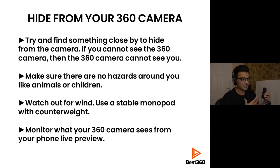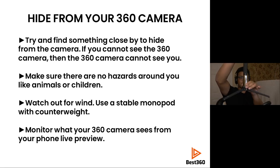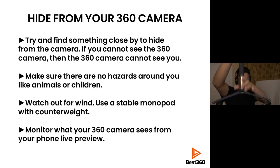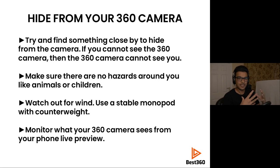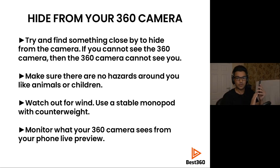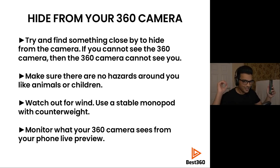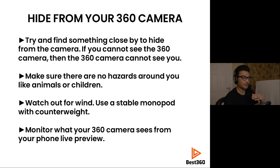Be careful of gusts of wind — this is probably the number one mistake that newbies make. Put a lot of weight on your monopod to keep it grounded; you can use ankle weights or lifted weights. The best way to see what your 360 camera is doing, especially in the city, is to monitor what it can see on your phone while taking a photo. You can keep scrolling around the preview to make sure no one is approaching or there are no hazards.